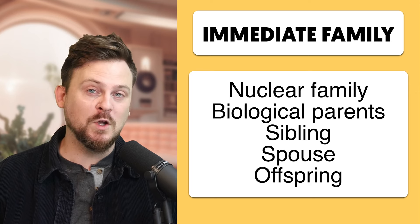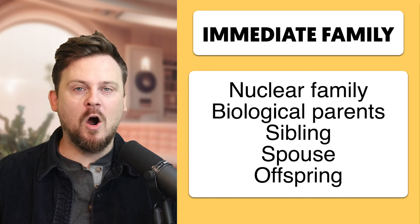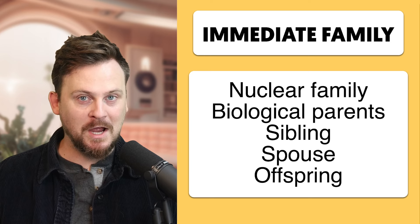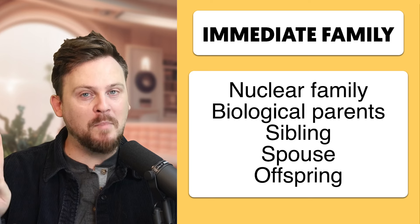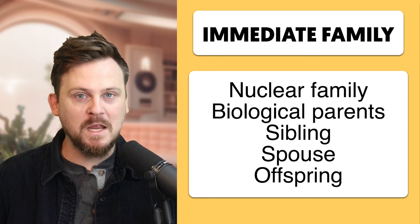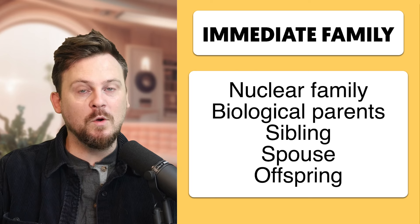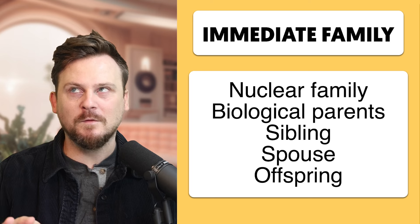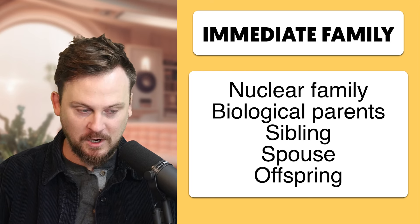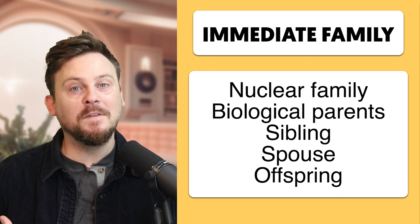Maybe I should define immediate family first. Your immediate family are the family nearest you — above, below, and to the side. Above would be mother and father, below would be son and daughter, to the side would be brother and sister. So if you're in the middle, looking around: up — mother, father; down — son, daughter; over — sister, brother. Think about that as being immediate family.